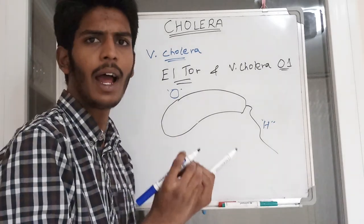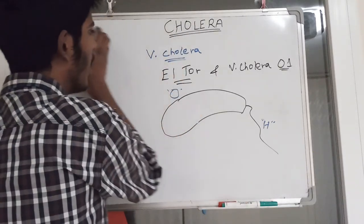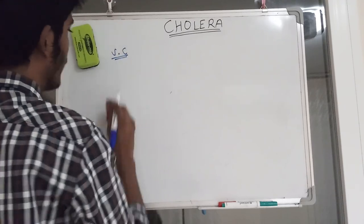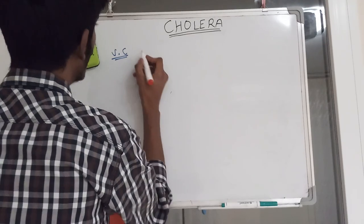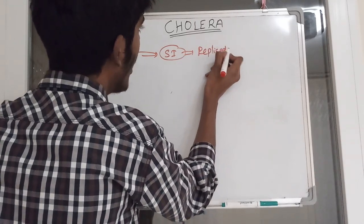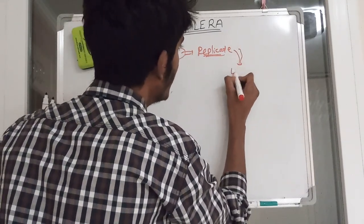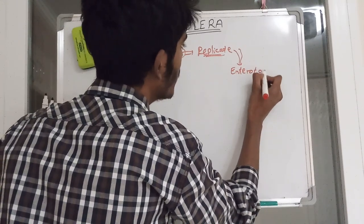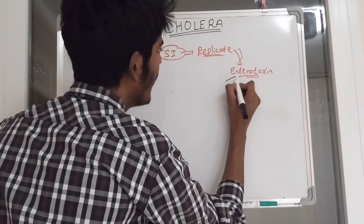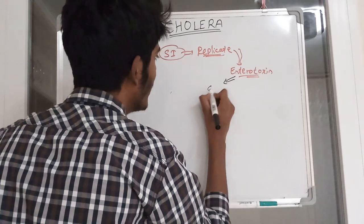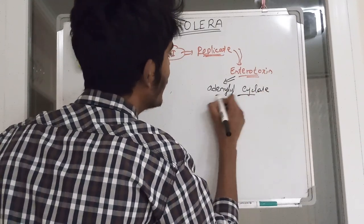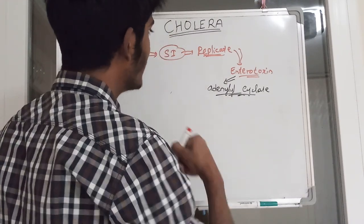It is spread generally by water and sometimes direct contact. Once Vibrio cholerae enters our body through the GI tract, it reaches the small intestine where it starts to replicate. After replication, it produces cholera toxin, that is enterotoxin. This enterotoxin activates an enzyme called adenyl cyclase, which in turn increases the cAMP level.